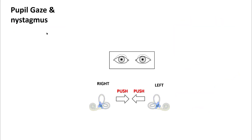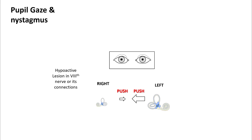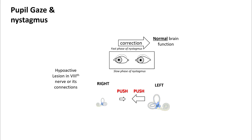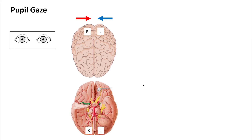Let's understand pupillary gaze and nystagmus. In normal conditions, either side of the vestibular system is pushing your eyes towards the other side, keeping them in equilibrium. However, if you have a hypoactive lesion on one side — for example, the right side — your pupils will drift towards the same side. This is the slow phase of nystagmus. In normal brain function, the brain will try to correct it, producing the fast phase of nystagmus. In patients with altered mental status or coma, the fast component is missing, so the eyes drift towards the side that is relatively more hypoactive.